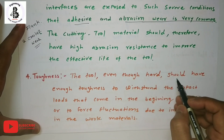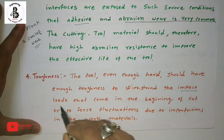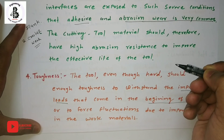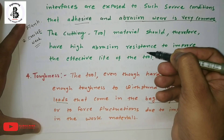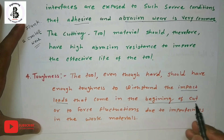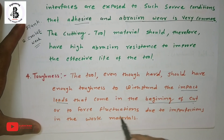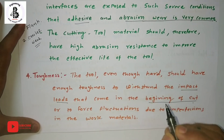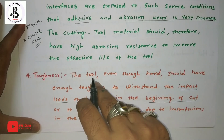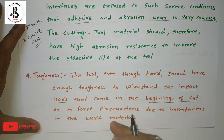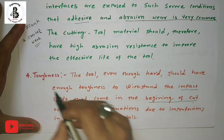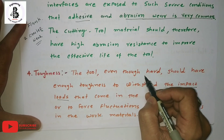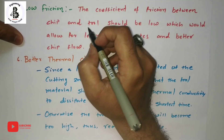The fourth characteristic is toughness. Even though the tool is hard, it should have enough toughness to withstand impact loads that occur at the beginning of a cut, when the tool first contacts the workpiece. These forces and fluctuations arise due to imperfections in the work material structure. So toughness is an essential property required alongside hardness in tool materials.